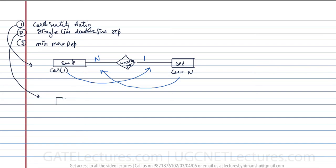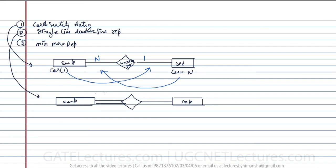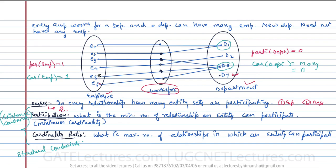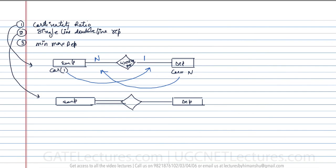In the single line and double line representation, we identify which side has total participation. Total participation is when the minimum cardinality at a particular site is one. Here, the participation of employee is one and the participation of department is zero. Since employee's participation is one, employees are totally participating in this relationship, which is denoted by a double line.